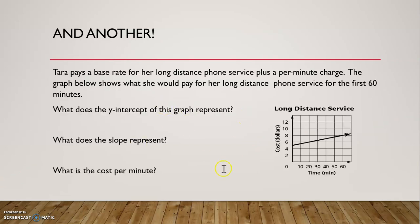Let's try another. Tara pays a base rate for her long-distance phone service plus a per-minute charge. This graph right here shows what she would pay for her long-distance phone service for the first 60 minutes. What does the y-intercept of this graph represent? Let's look back at the problem. So she pays a base rate. What does a base rate mean? That means it's a flat fee that you pay regardless of how much time the call lasts.